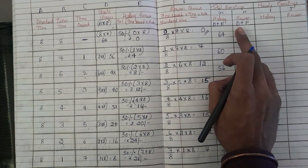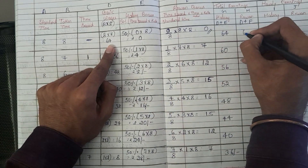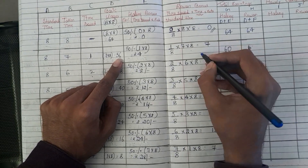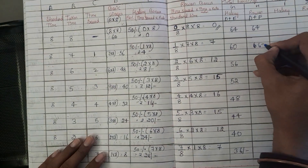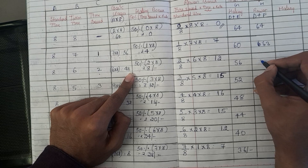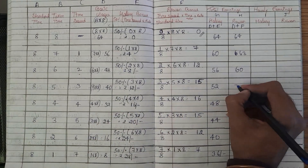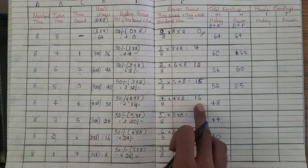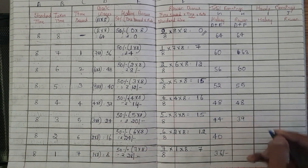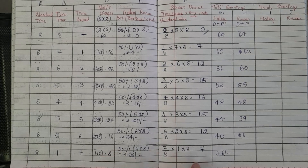For total earnings under the Rowan plan, we add the basic wages column (D) plus the Rowan bonus column (F): 64+0=Rs.64; 56+7=Rs.63; 48+12=Rs.60; 40+15=Rs.55; 32+16=Rs.48; 24+15=Rs.39; 16+12=Rs.28; and 8+7=Rs.15.